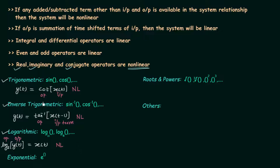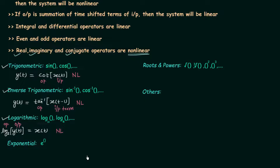The next family is the family of exponentials, for example e raised to the power of something. Consider the system y(t) equals e raised to the power x(t). Here x(t) is the input, and the exponential operator is operating on the input. Therefore the system is a nonlinear system because the exponential operator is a nonlinear operator.